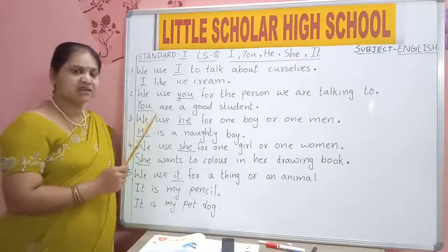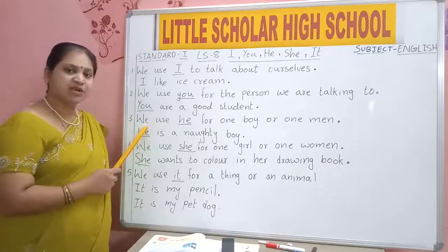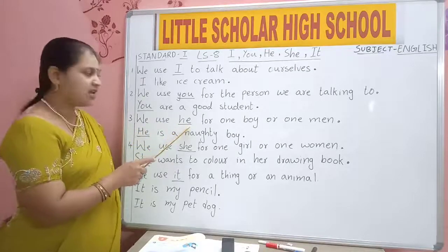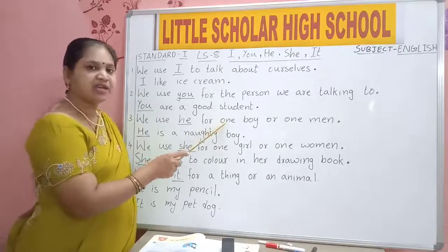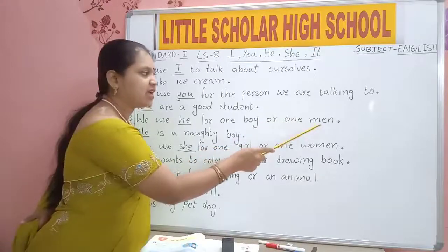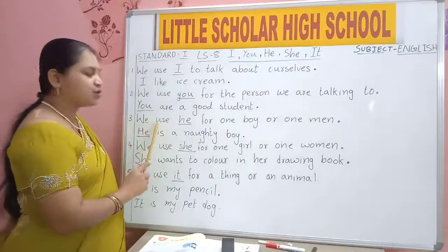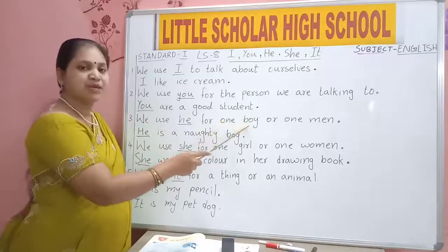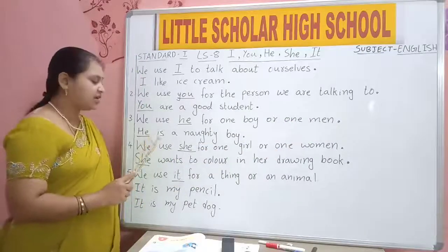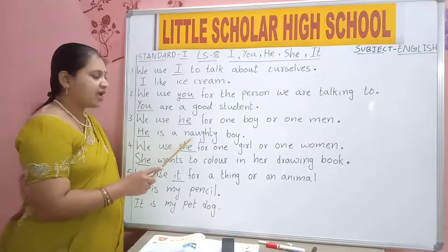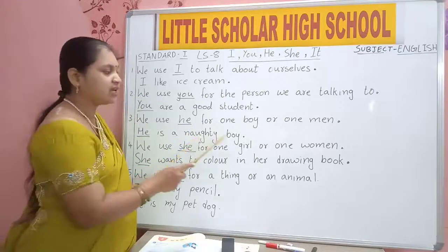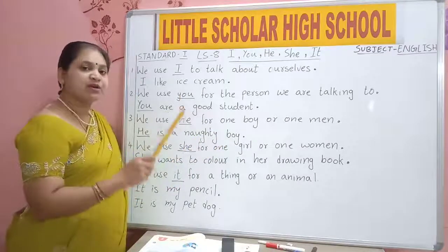Third one. We use HE for one boy or one man. He is a naughty boy. We use SHE for one girl or one woman. She wants to color in her drawing book.